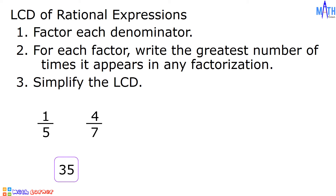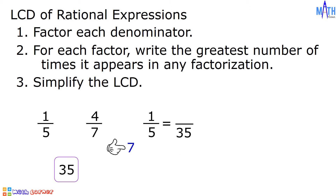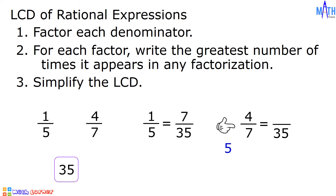Let us convert 1 over 5 and 4 over 7 to an equivalent rational expression having the LCD. For 1 over 5: 35 divided by 5 is equal to 7, then 7 times 1 is equal to 7, so 1 over 5 is equal to 7 over 35. For 4 over 7: 35 divided by 7 is equal to 5, then 5 times 4 is equal to 20, so 4 over 7 is equal to 20 over 35.